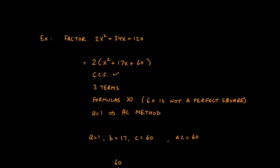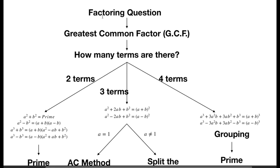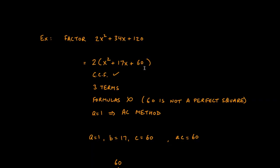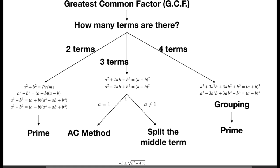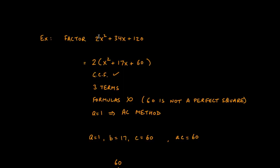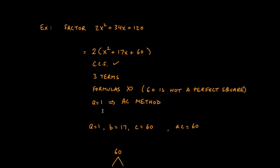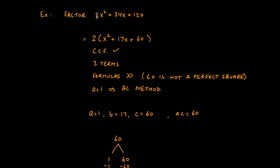Let's look at another example: 2x² + 34x + 120. Going back to the decision tree, the first thing is the GCF — and in fact that saves us here. If we hadn't factored out the GCF, the formulas wouldn't work and we'd be left with an a value that's not 1, requiring much more work. We factor out 2, since 2 divides into 2, 34, and 120, leaving behind x² + 17x + 60.